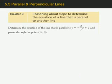Okay, we're in section 5.5 on parallel and perpendicular lines. For this example, we are asked to determine the equation of the line that is parallel to y equals negative 2 over 7x plus 3 and that also passes through the point (14, 9). So let's see how we go about solving this.